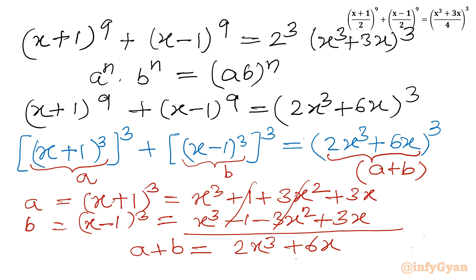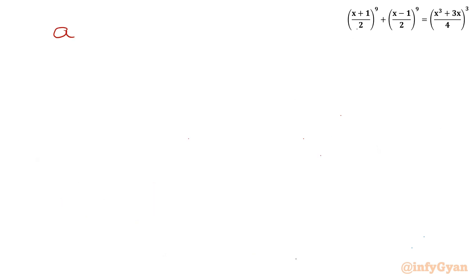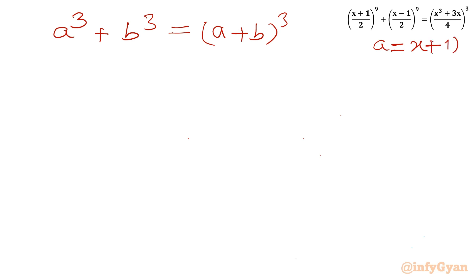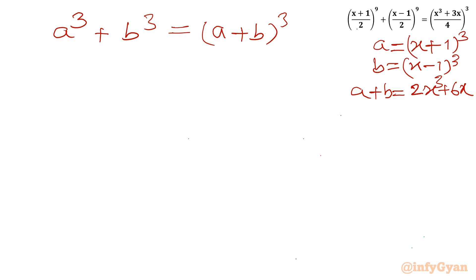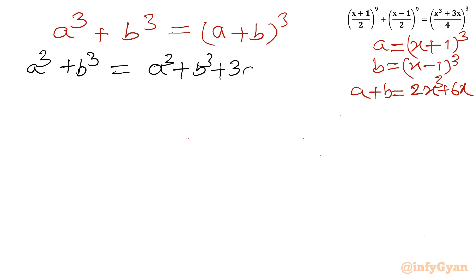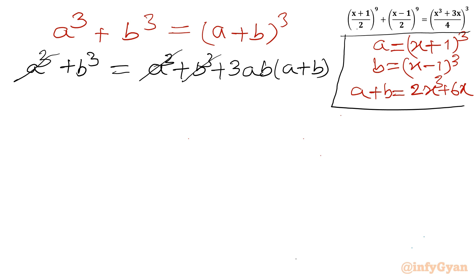So I will write a³ + b³ = (a+b)³. Applying the identity (a+b)³ = a³ + b³ + 3ab(a+b), the a³ + b³ terms cancel from both sides, leaving 3ab(a+b) = 0.